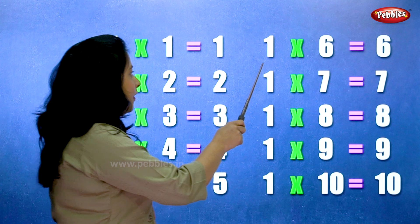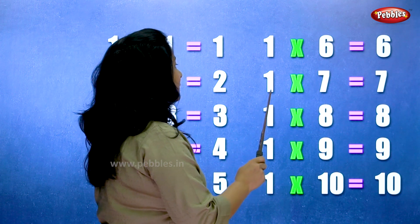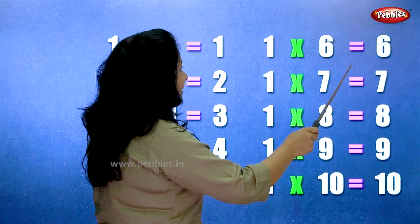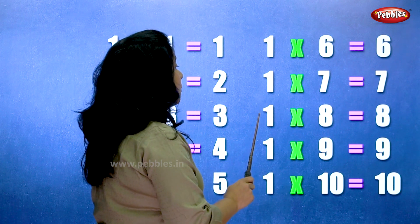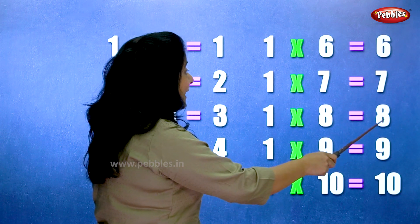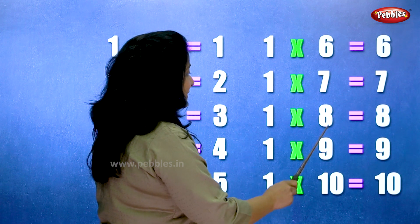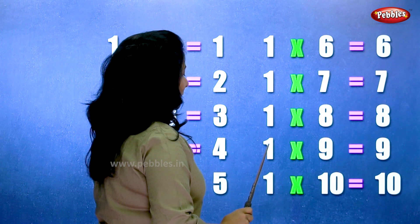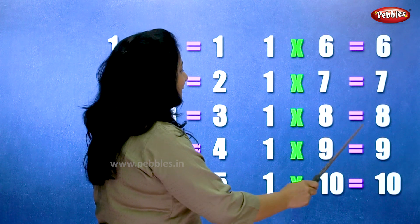1 5s are 5. 1 6s are 6. 1 7s are 7. 1 8s are 8. 1 9s are 9. 1 10s are 10.